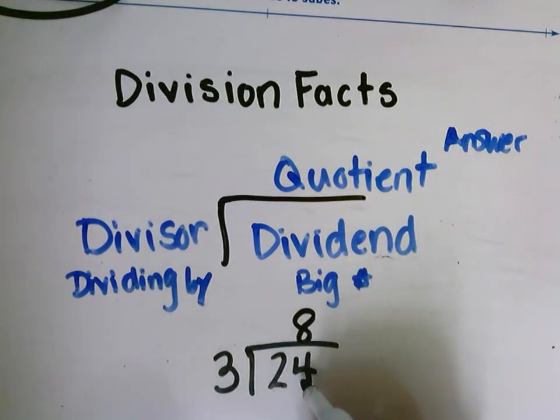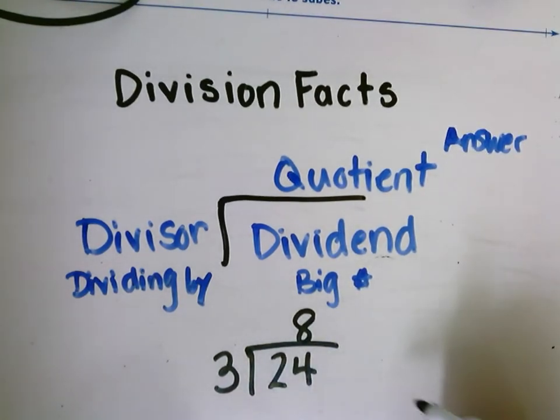3 times 8 is 24. 24 divided by 3 is 8. 8 times 3 is 24. We're going to keep using that knowledge of our fact families. They're still all together, same fact family like we worked on earlier this week.